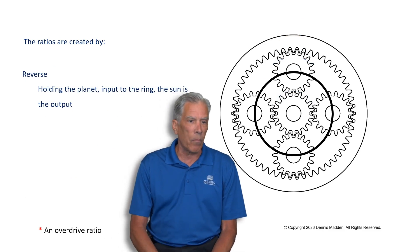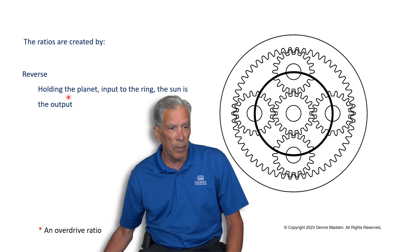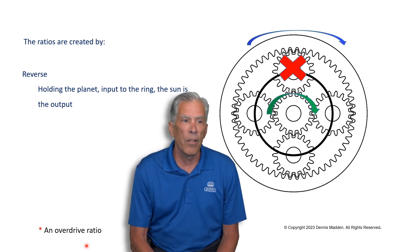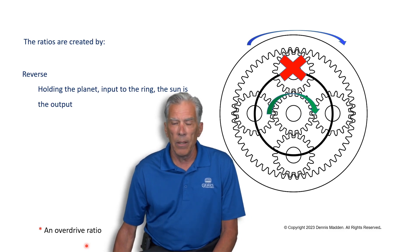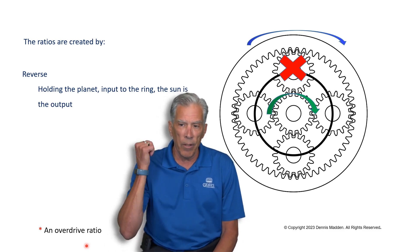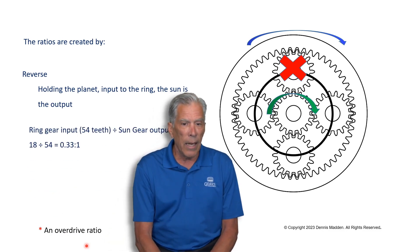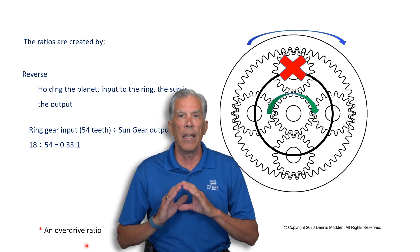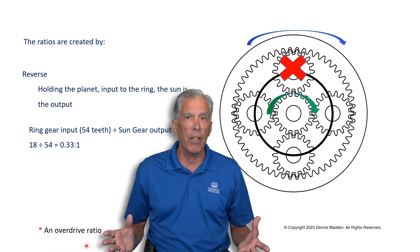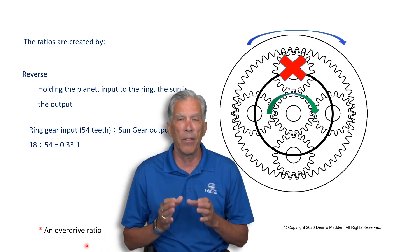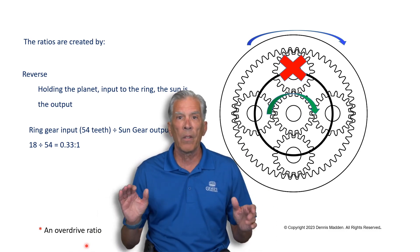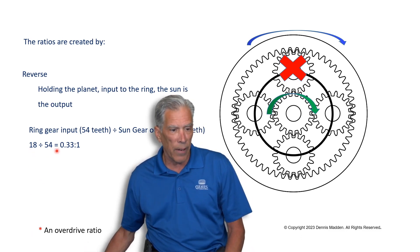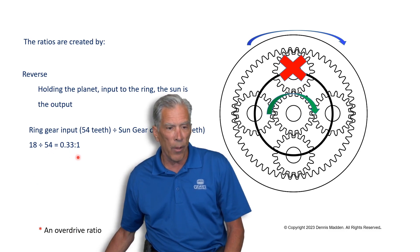Reverse: reverse is accomplished by holding the planet stationary. Anytime you hold the planet, you wind up with reverse. In this example the ring gear is the input and the output going to the rear wheels is the sun gear. Notice the difference in the calculation — you no longer add the ring gear and sun gear as a sum factor. Because the planet is held, it's strictly an idler, so it's simply one divided by the other: sun gear divided by ring gear equals 0.33:1.